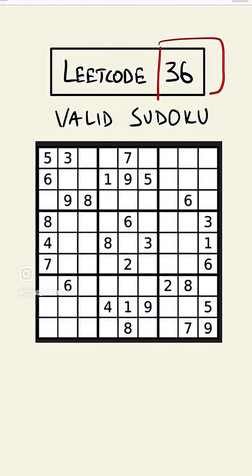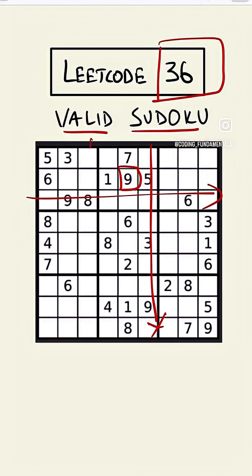In this question we'll validate our Sudoku. By validating, we mean that we'll check each number. For example, we'll check this number 9. It should not come in this column or this row or in this box twice.